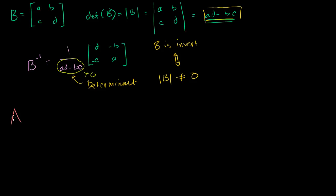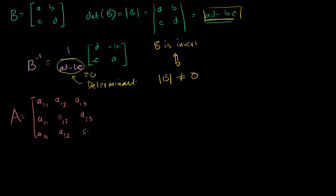Let's say my matrix A is equal to — let me just write its entries — first row: A 1,1, A 1,2, A 1,3. Then you have A 2,1, A 2,2, A 2,3. Then you have A 3,1, A 3,2, and A 3,3. That is a 3 by 3 matrix — clearly three rows and three columns.